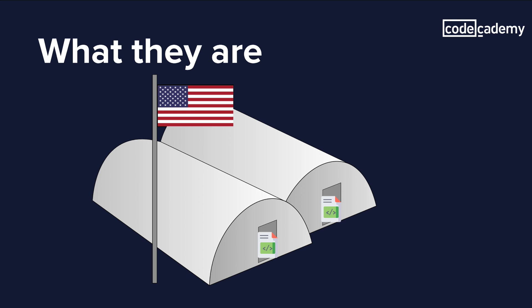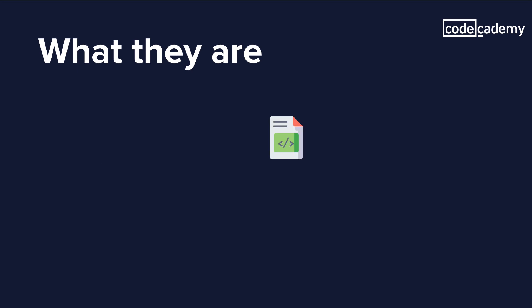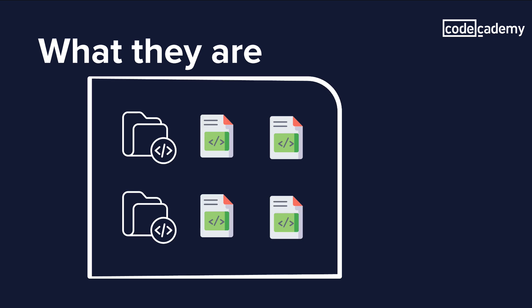What is a code base? Believe it or not, it's not an actual base like a military base or something that protects code. A code base is essentially a complete body of source code for a given program or application. In other words, it's all the code that the program needs to run in one single location. When you're first starting out as a programmer, your program might be contained in one single file or a few files at most — and if that's the case, that one file or those few files is your code base.